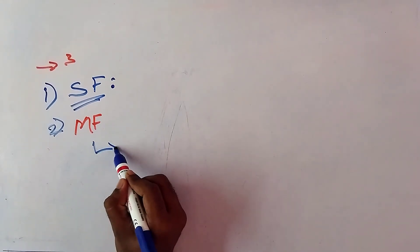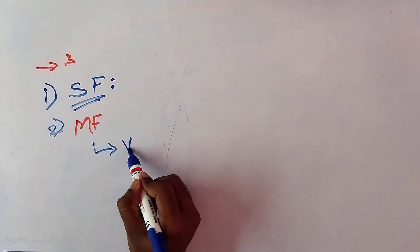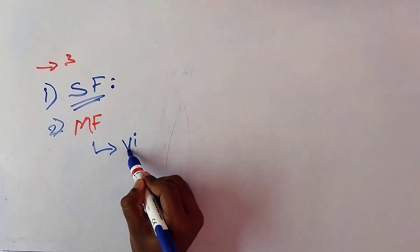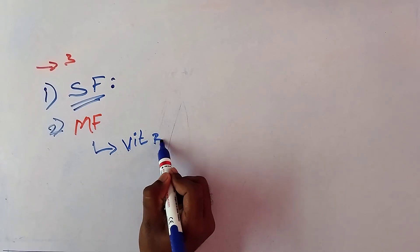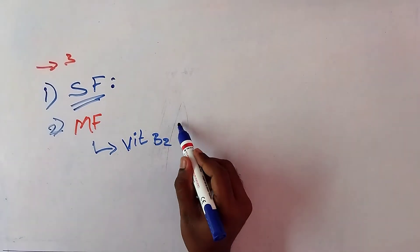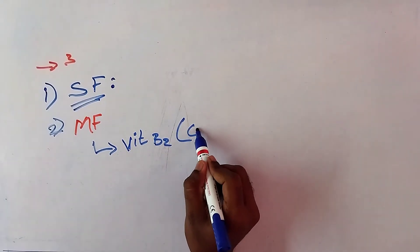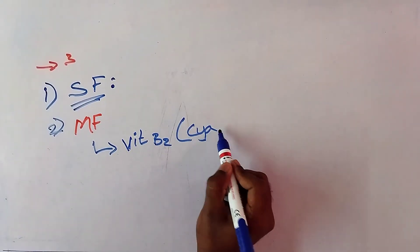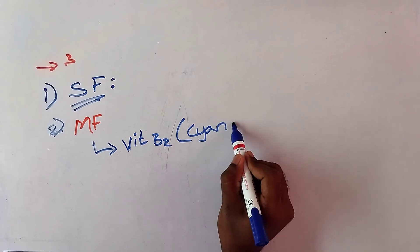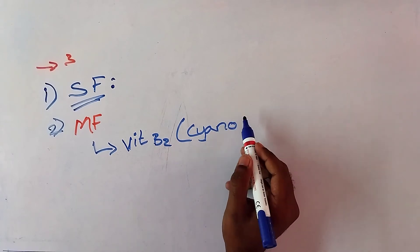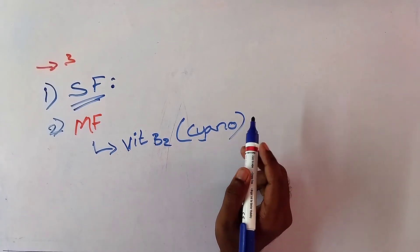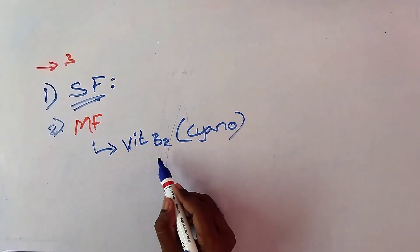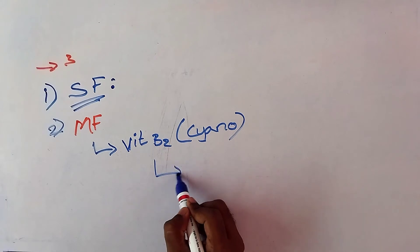In the maturation of RBC, Vitamin B12 acts mostly. Vitamin B12 is also called cyanocobalamin. This Vitamin B12 is an extrinsic factor — it is obtained mostly through diet. It is stored mainly in the liver and also in small quantities in muscles.